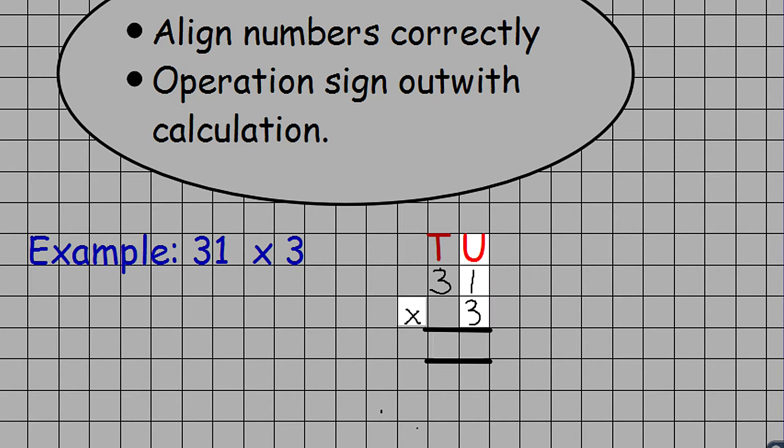We always begin with looking at the units column first. So here we have 3 times 1, which is 3, and 3 times 3, which is 9, giving the children the answer of 93.